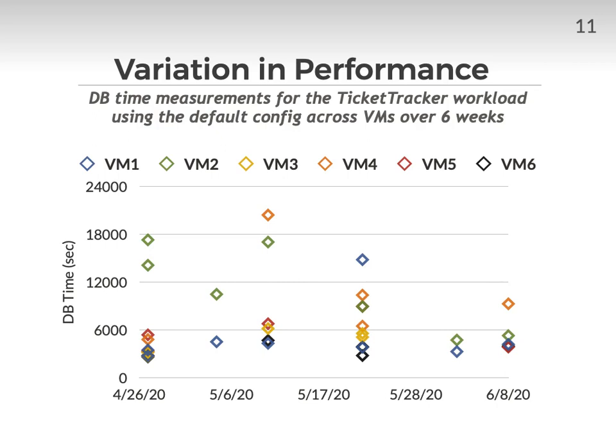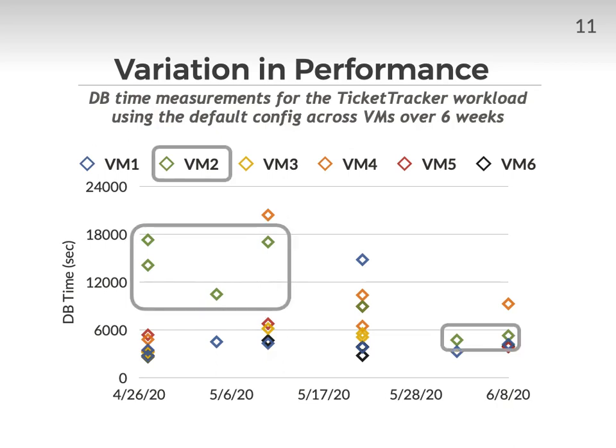This first result demonstrates an unexpected challenge we encountered during this study: high variation in performance across the VMs we used, due to latency spikes in the shared disk storage. This graph shows the dbtime for the ticket tracker workload when running with the default configuration across our VMs over a six-week period. The results show how performance varies widely across the VMs during the same time period, and also how performance can vary greatly for the same VM over time. This meant that we had to conduct many trials per experiment in order to reliably compare the results, and this was a time-consuming process since each trial took around three days to run.